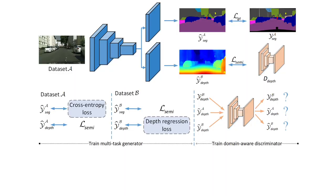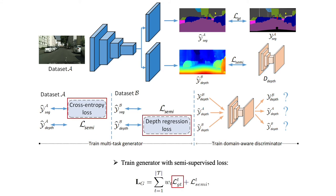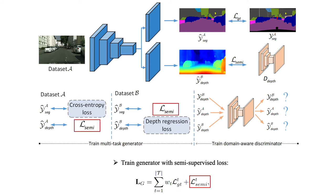We construct the proposed model to optimize both the labeled and unlabeled tasks simultaneously within each dataset. Correspondingly, the overall objective functions for the generator contain the supervised and unsupervised losses. We then iteratively explore all datasets and update the model after observing sufficient samples in each dataset.